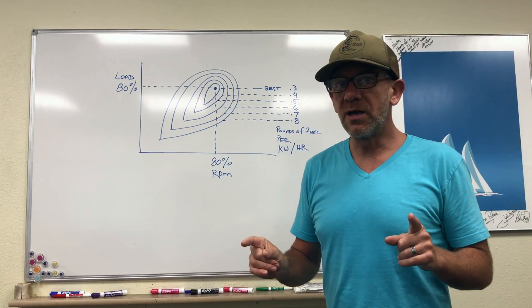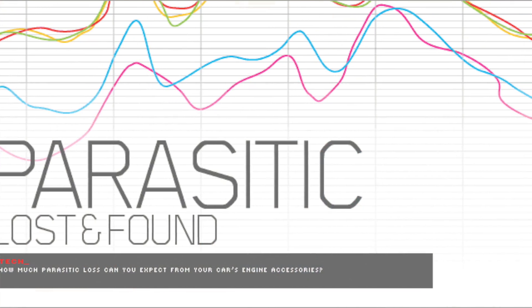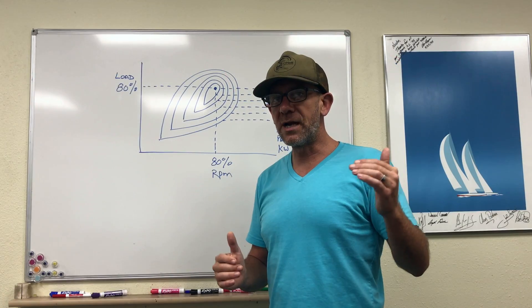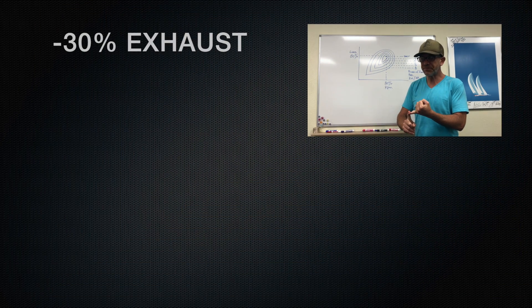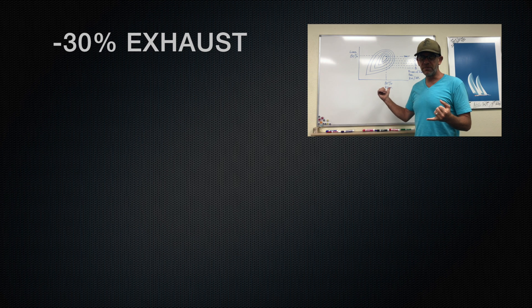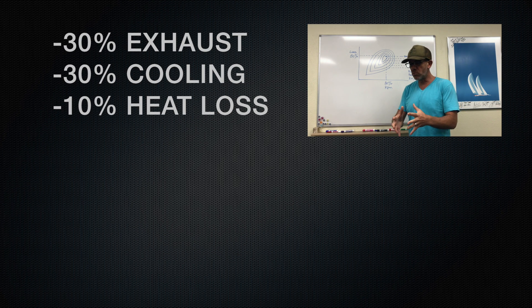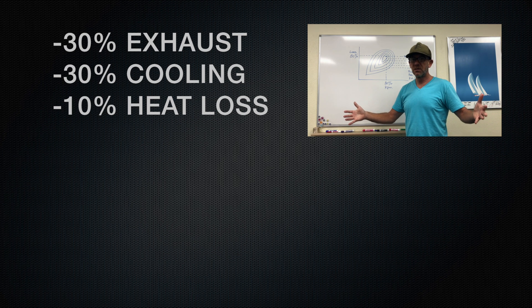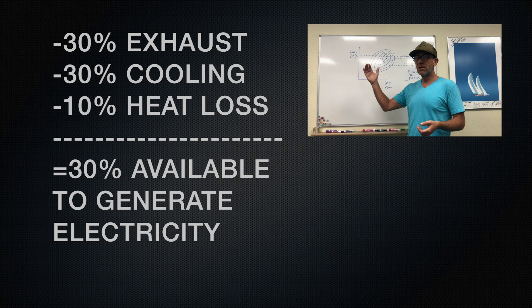Now when you run that fuel through a diesel motor, diesel motors have considerable parasitic losses. Those parasitic losses will detract from the overall power. So you're going to spend roughly 30% of the energy going out the exhaust pipe, another 30% is going to go through the cooling system, and then you're going to lose another about 10% of just radiated heat coming off of the block. So what you're left with is 30% of the available energy in that 130,000 BTUs that's available to generate electricity.